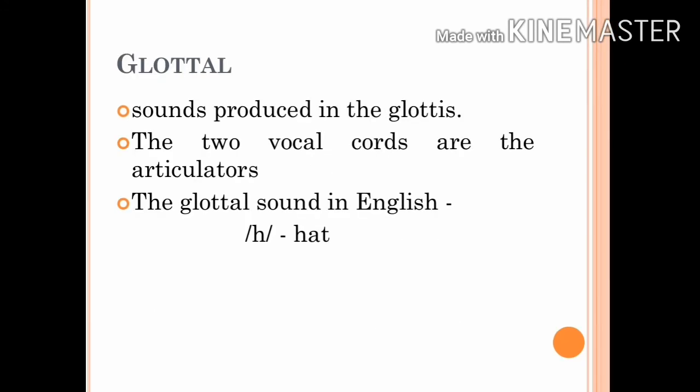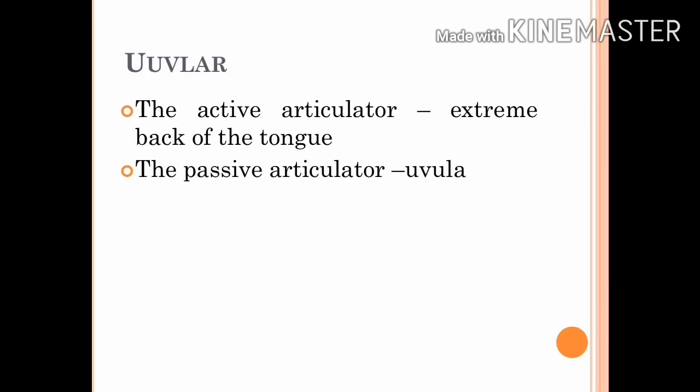Glottal sounds are produced in the glottis. The two vocal cords are the articulators involved, both active. The sound H as in the word 'hat' is the one glottal sound that occurs in English. Uvular: the extreme back of the tongue is the active articulator and the uvula is the passive articulator. There are no examples of uvular consonants in English.